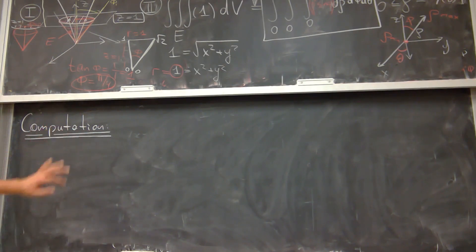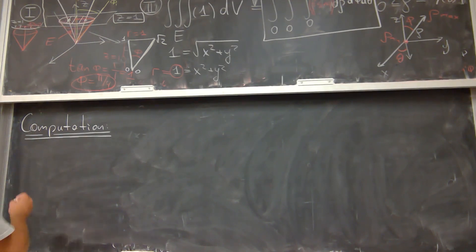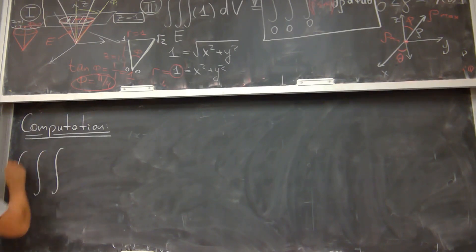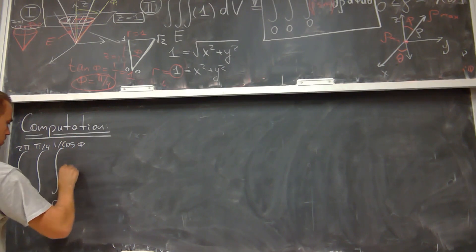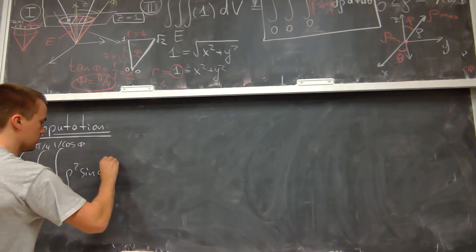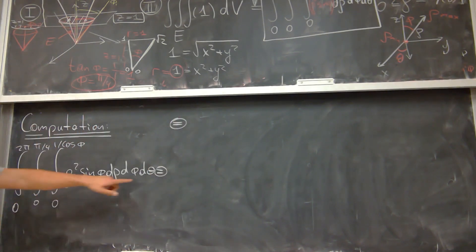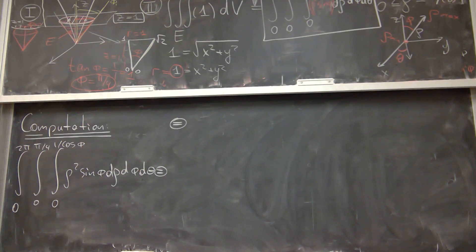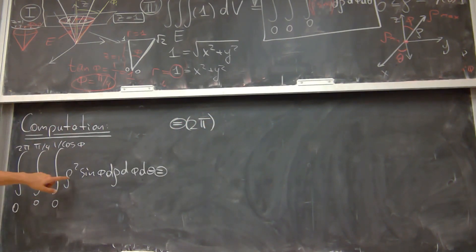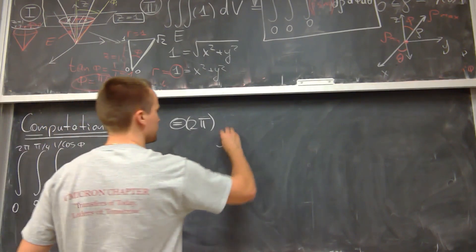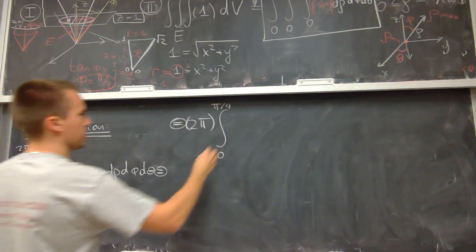Let's compute this integral. I have the integral from 0 to 2π, from 0 to π/4, from 0 to 1/cos φ of ρ² sin φ dρ dφ dθ. Since the integrand doesn't depend on θ, I evaluate that integral right away to get 2π, then integrate with respect to ρ to get 2π times the integral from 0 to π/4 of sin φ times ρ³/3 evaluated from 0 to 1/cos φ dφ.